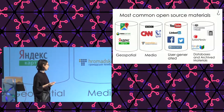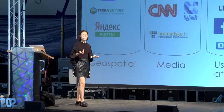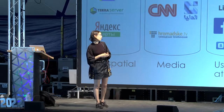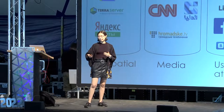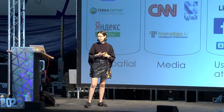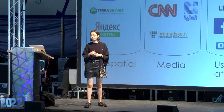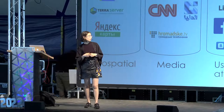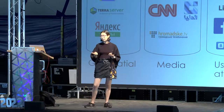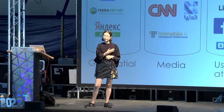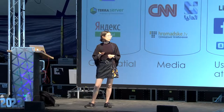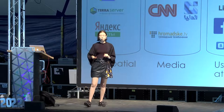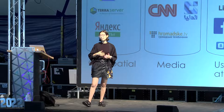The third category is user-generated content — basically everything on social media that users are posting. You all know how much information is out there on YouTube, LinkedIn, Instagram, TikTok, Facebook, Vkontakte, and so on. We use this information a lot. The last one is databases and archived materials — basically human knowledge of the world: databases of books like Google e-books, governmental databases like Companies House, private databases like LexisNexis, and the Internet Archive.